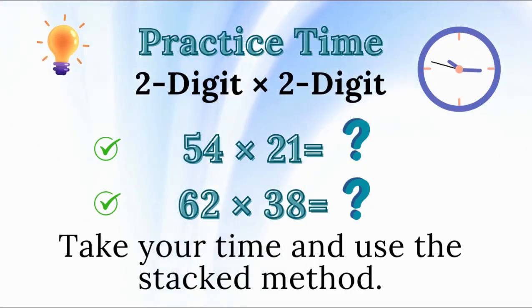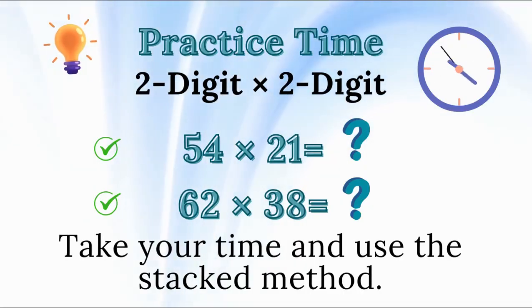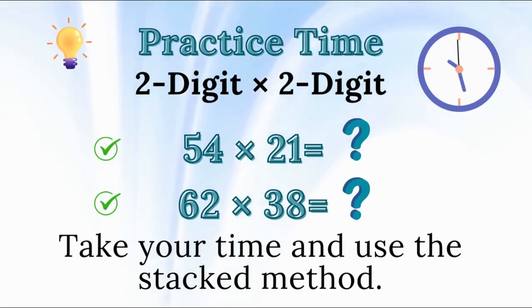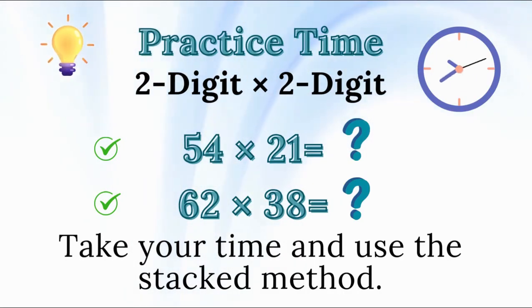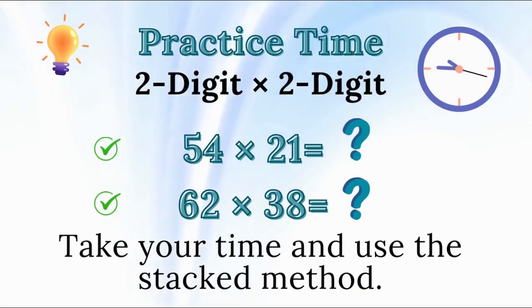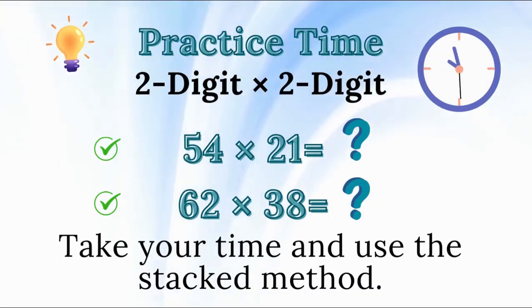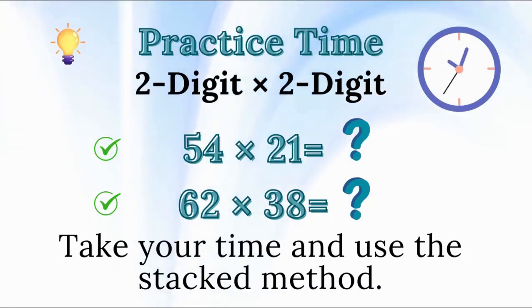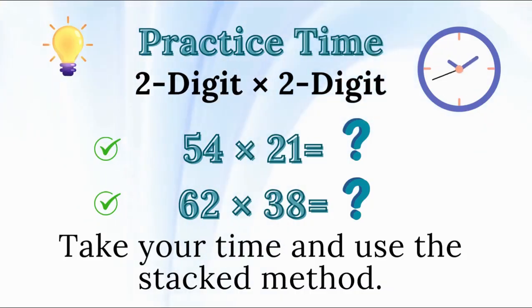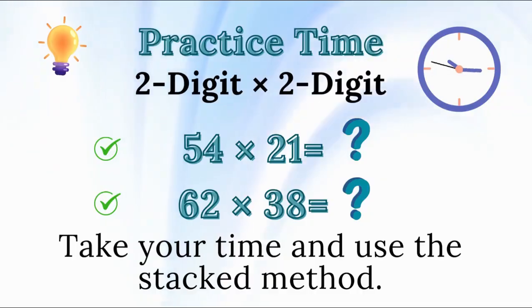Practice time — 2-digit times 2-digit. What is 54 times 21? What is 62 times 38? Take your time and use the stacked method.